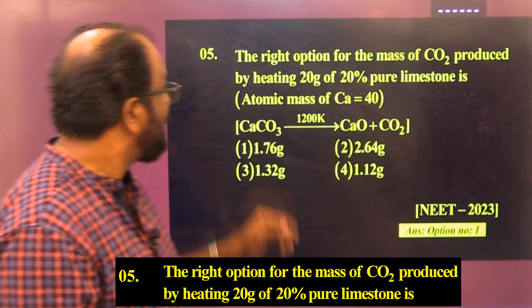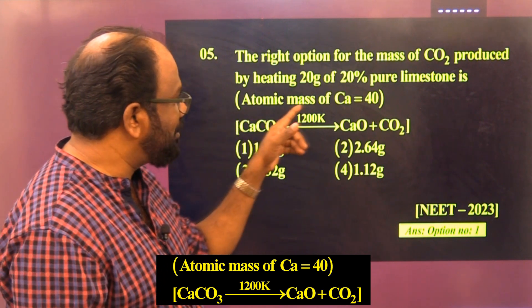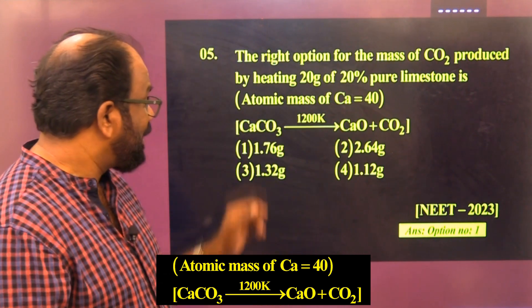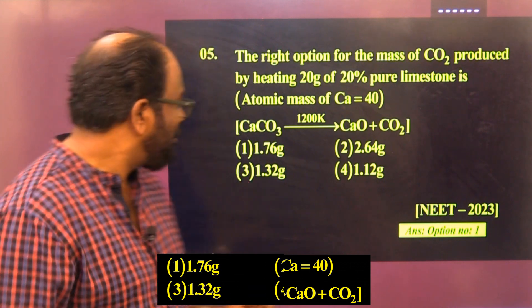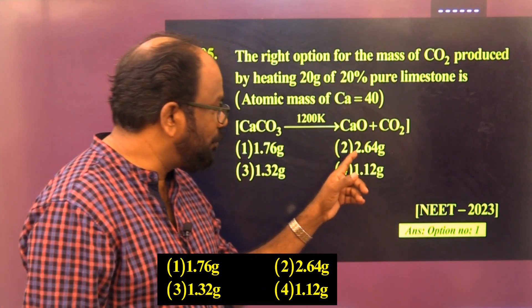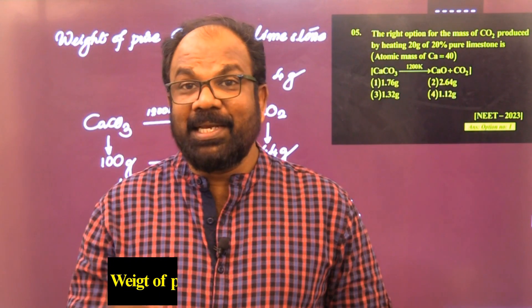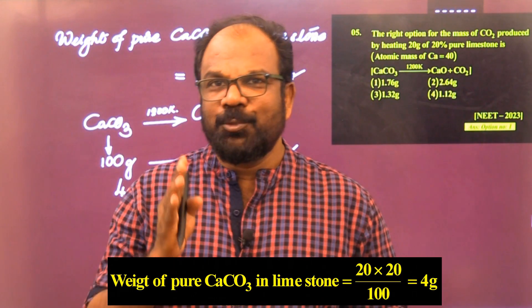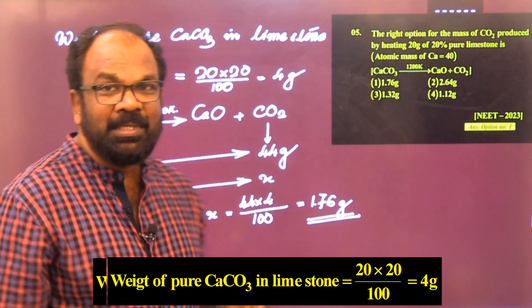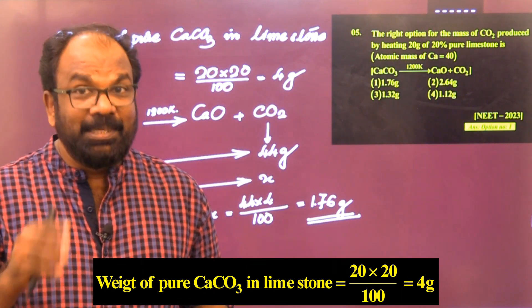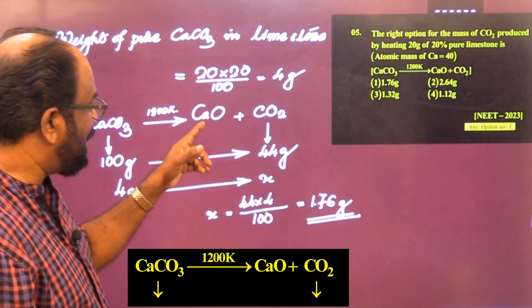Question 5: What is the mass of CO₂ produced by heating 20 grams of 20% pure limestone? (Atomic mass of Ca = 40.) The reaction is: CaCO₃ →(1200 K) CaO + CO₂. Options: 1.76g, 2.64g, 1.32g, 1.12g. First, mass of pure CaCO₃ in 20g of 20% limestone = 20 × 20/100 = 4g. So 20g of 20% limestone contains only 4g of pure CaCO₃.